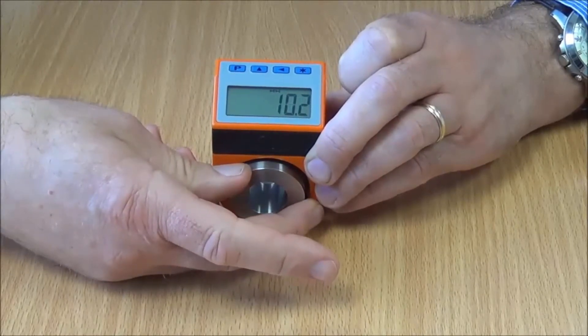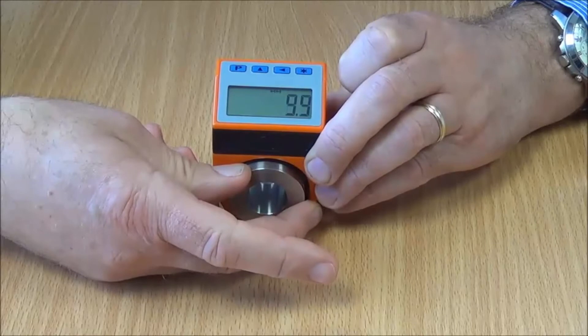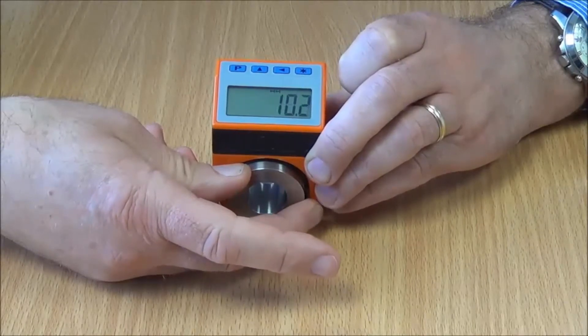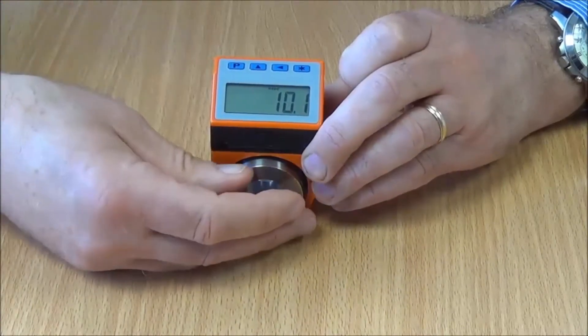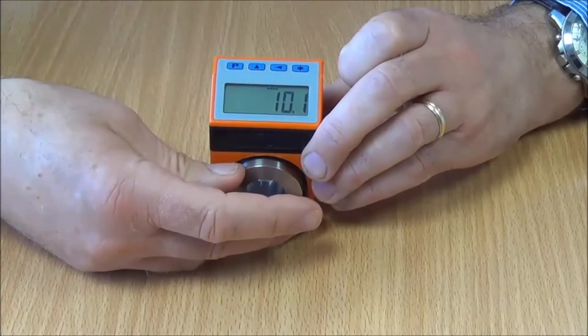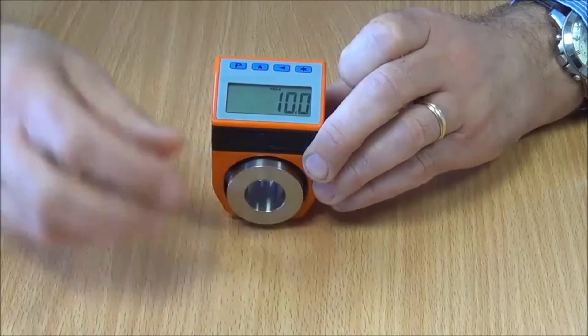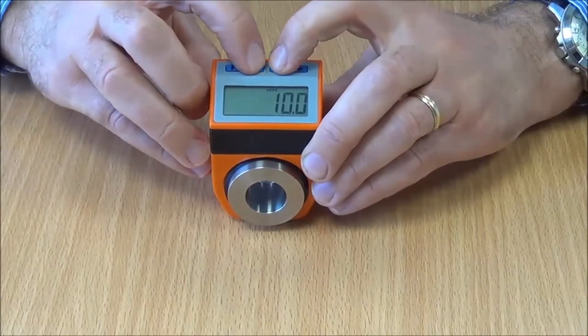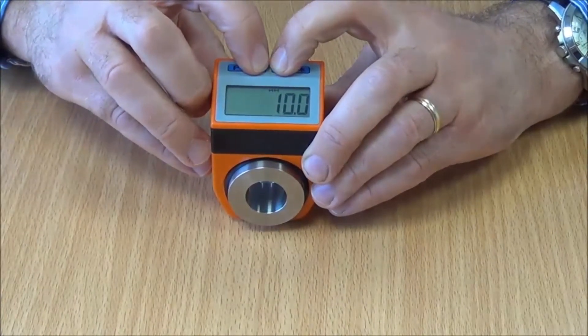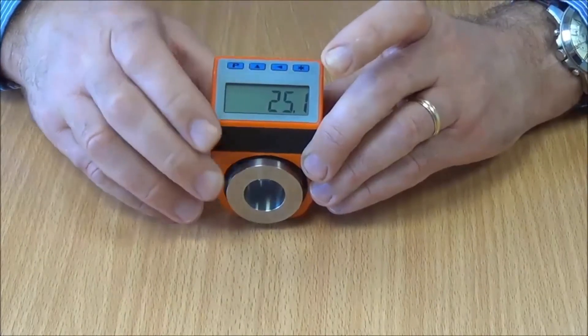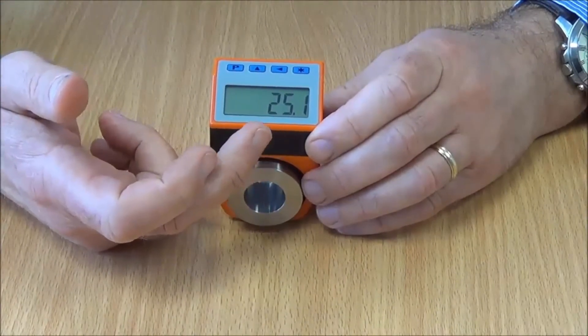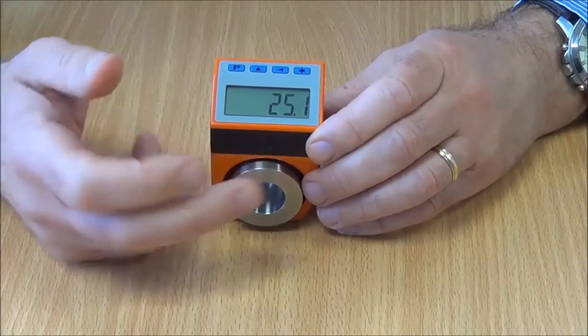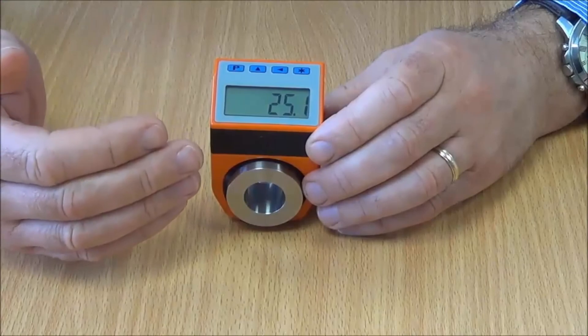We can make the next cut or drill at 10 millimeters. And then once we've done that, we can press the two arrow buttons again and those values would be added together, so we still know we are 25, in this case 25.1 millimeters away from the zero point on the machine.